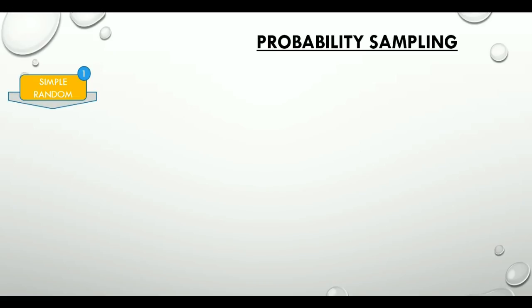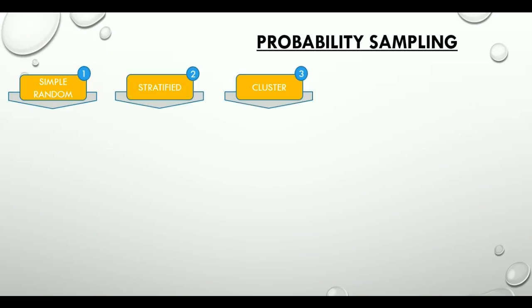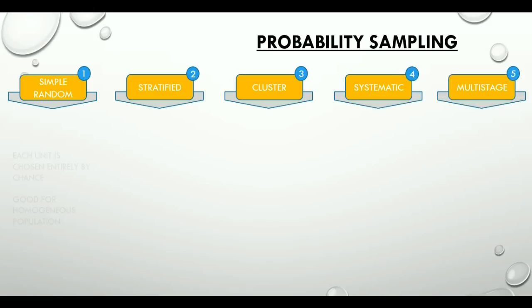Simple random: sample selection here is entirely by chance and is good for a homogeneous population — that is, one composed of parts or elements that are all of the same kind.